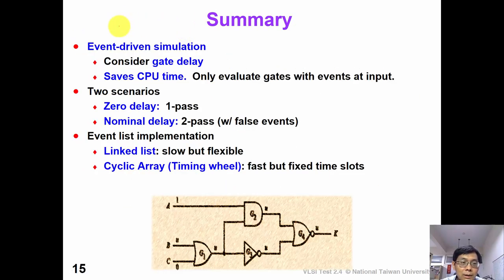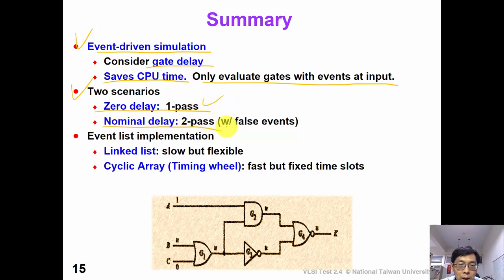Now in summary, this video talks about event-driven simulation, which considers gate delay. This simulation technique is potentially faster than compile code because we only evaluate those gates with input change. There are two scenarios: for the zero delay simulation, we can use the simple one-pass algorithm. For nominal delay, we need to use a more complicated two-pass algorithm. The false event means those redundant events that do not cause any signal change. Finally, we have two different implementations — the linked list approach and the timing wheel approach, which is faster but less flexible than the linked list approach.